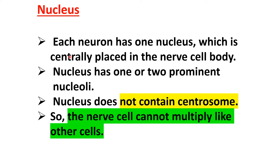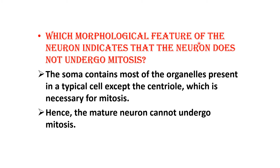Each neuron has one nucleus, which is centrally placed in the cell body. The nucleus has one or two prominent nucleoli. The nucleus does not contain a centrosome, so the neuron cell cannot multiply like other cells. The soma contains most of the organelles present in a typical cell except the centriole, which is necessary for mitosis. Therefore the mature neuron cannot undergo mitosis.